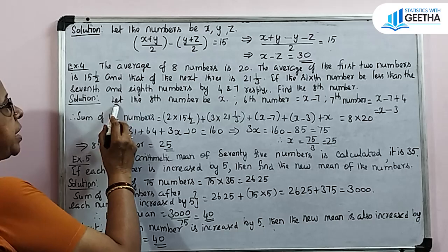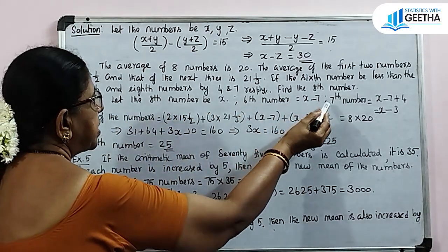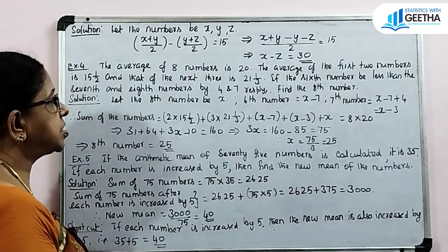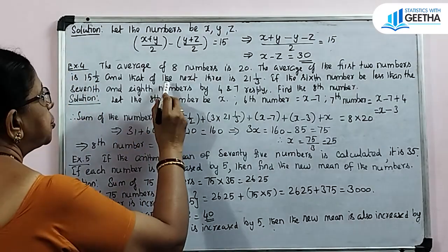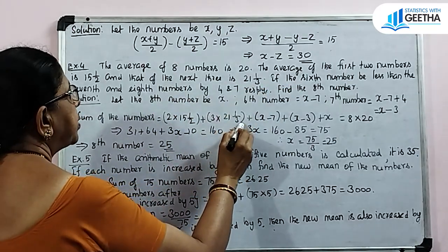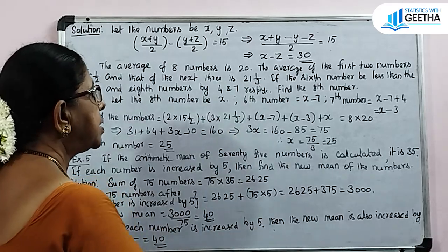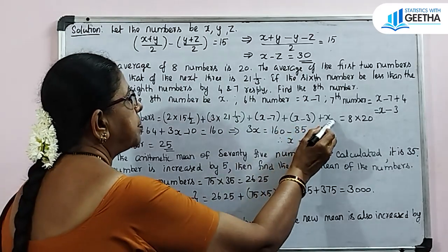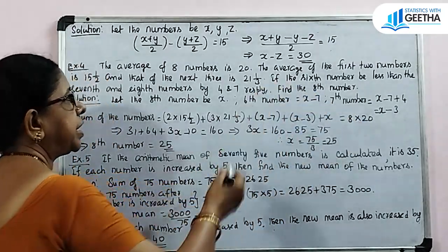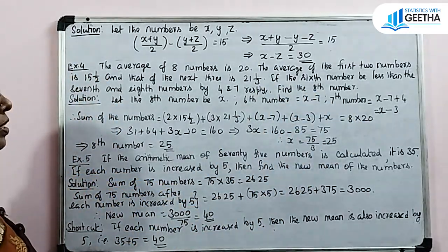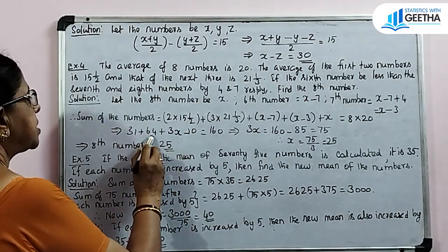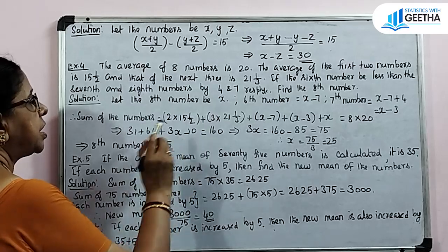Let the 8th number be x. The 7th number is x minus 4, and the 6th number is x minus 7. Sum of all 8 numbers equals 2 into 15.5 plus 3 into 21.33 plus (x minus 7) plus (x minus 3) plus x equals 8 into 20 equals 160. Simplifying: 31 plus 64 plus 3x minus 10 equals 160.